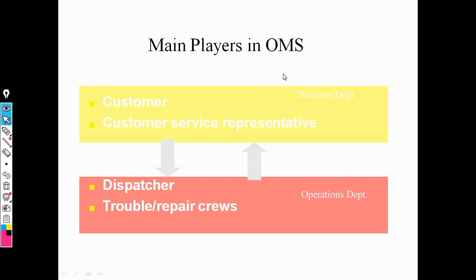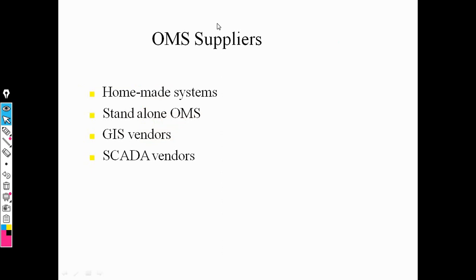The main players in the outage management system are customer service and dispatch — providing whole service to the customer is the business department — and dispatch trouble and repair, which is operations. These are the two main players in using the outage management system.